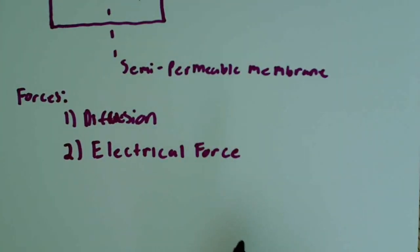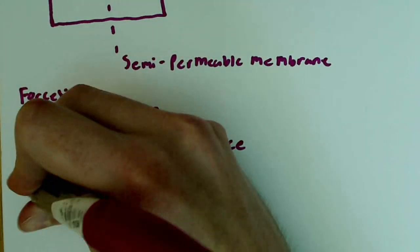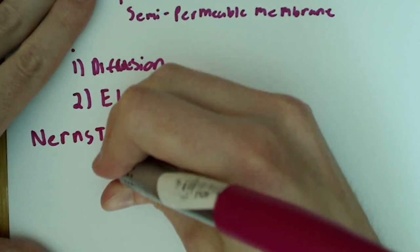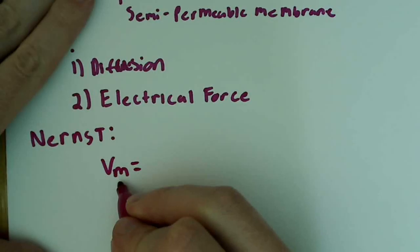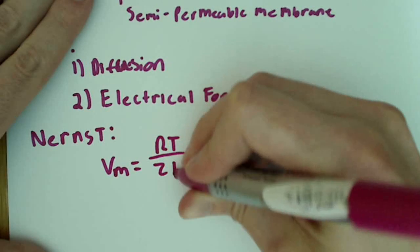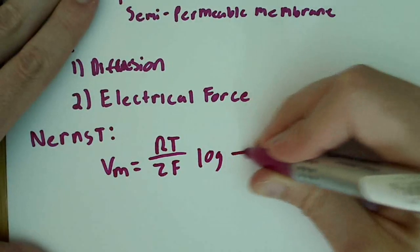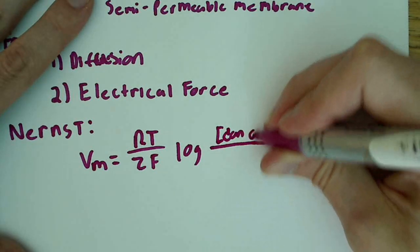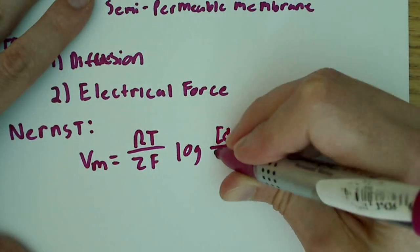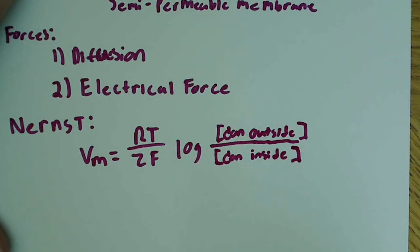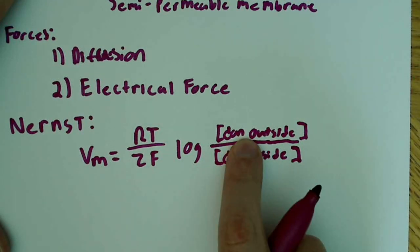So with that said, I briefly introduced the Nernst equation. So there's something known as the Nernst equation. And I said that basically it can be modeled like this. So I said it could be Vm, so remember that's membrane potential Vm, is equal to RT over ZF. And that's multiplied by the log of the concentration outside over the concentration inside.